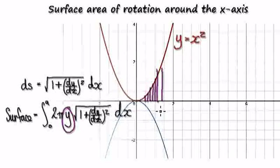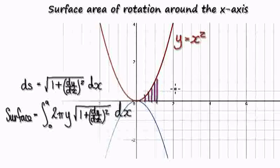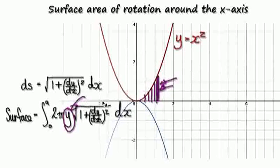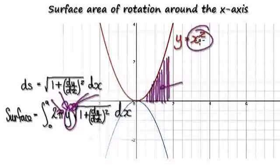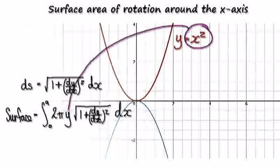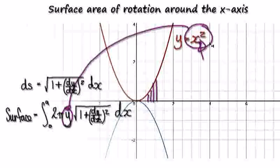The surface area is given by this expression. This y here — remember, you're moving along in the x direction, and as you're moving along you need to multiply by the circumference of the circle. So you need the radius, and in this case the radius is the height. The height is y. So as you're moving in the x direction you always need the height — the value of y. The height is y, and y equals x squared. So later on we can substitute x squared in for y, because as you're moving along the height is always given by x squared.